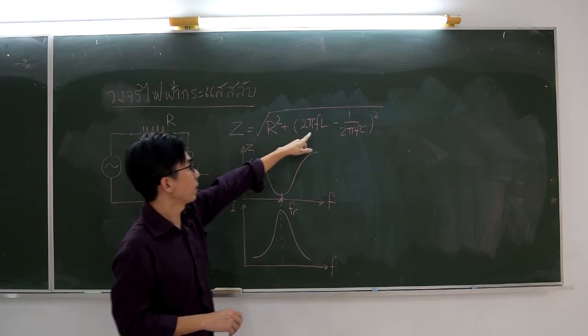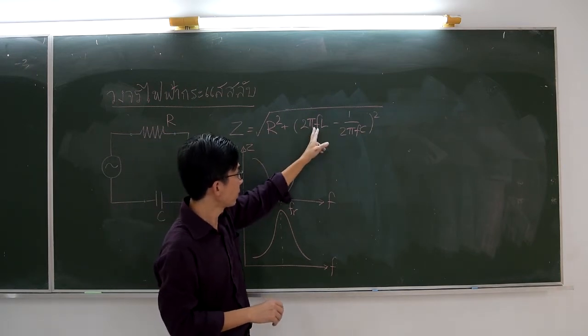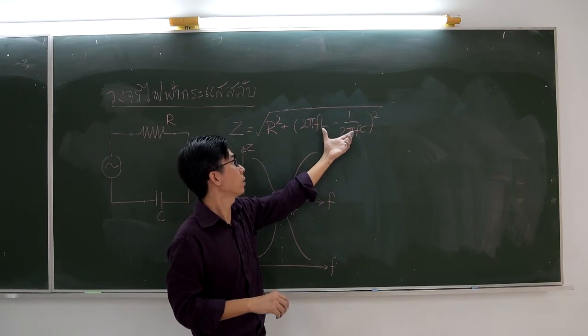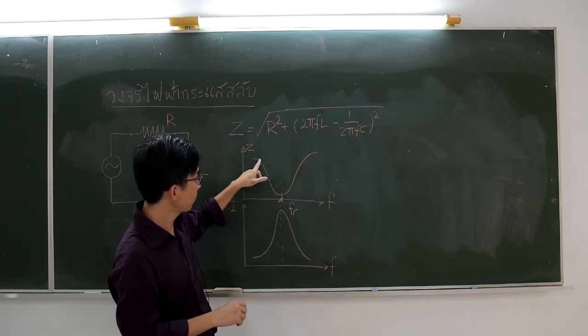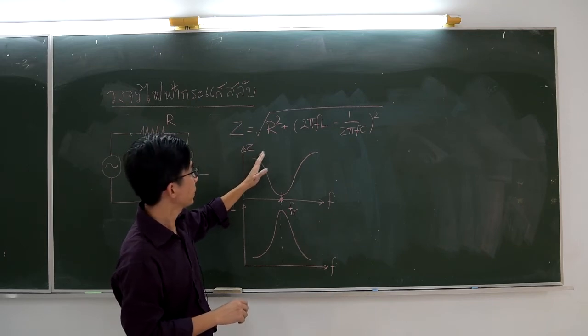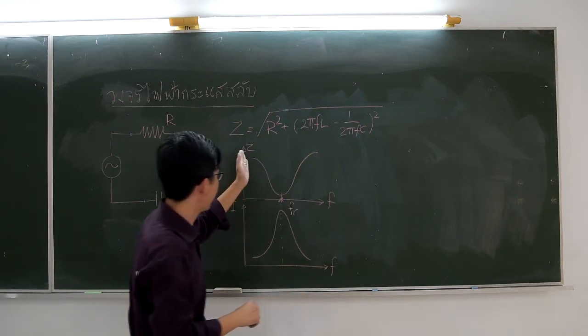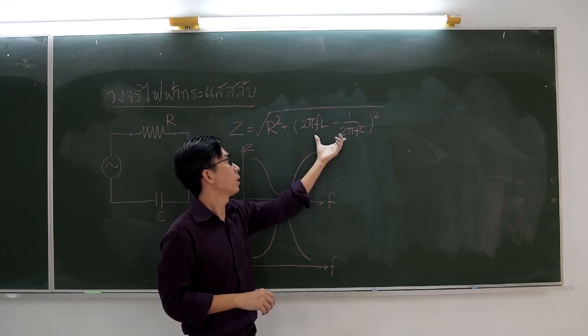As frequency increases, XC becomes smaller, so is the impedance. At a specific frequency, the impedance becomes minimum. If we continue to increase the frequency, now the impedance gets bigger as XL will dominate.